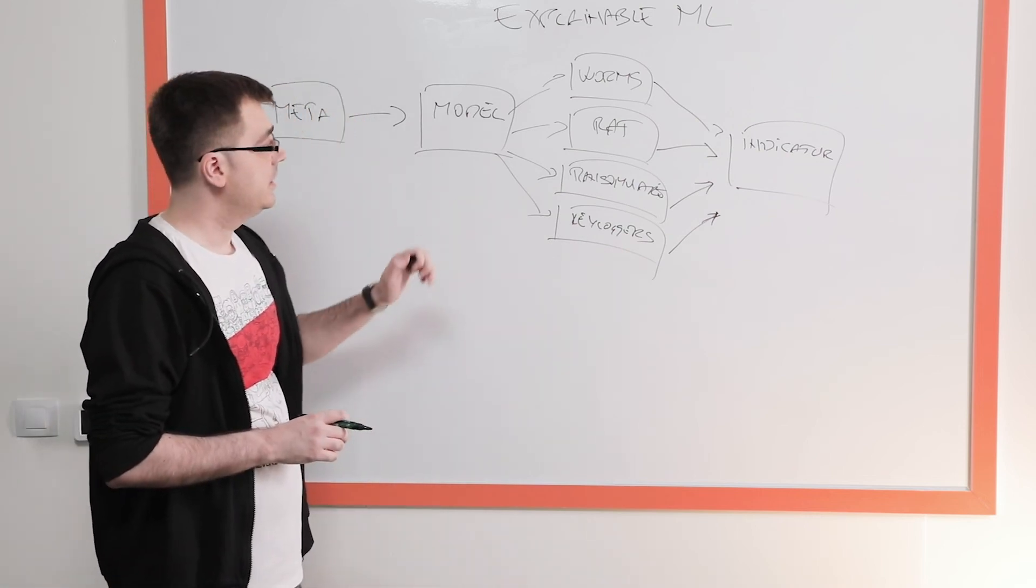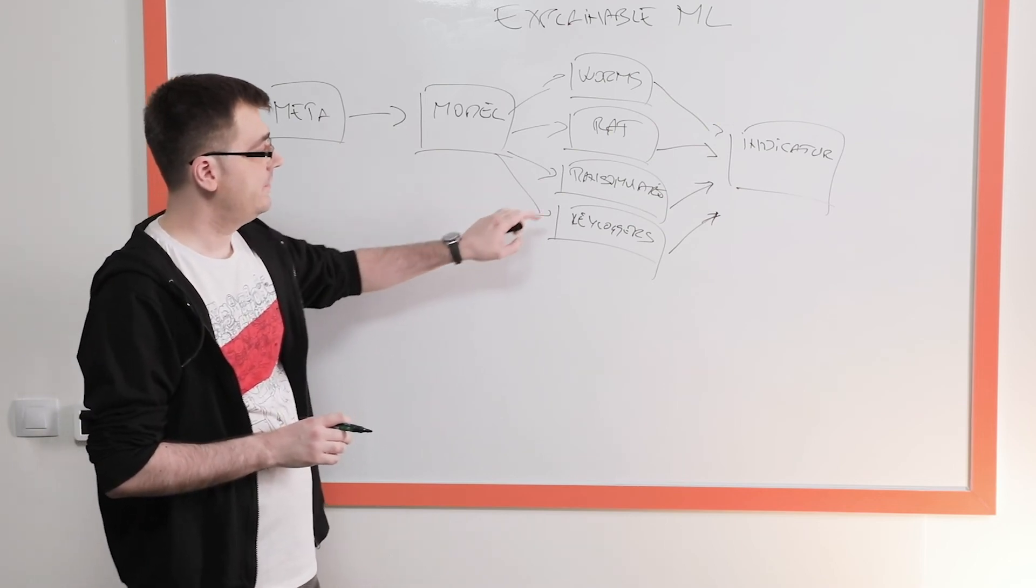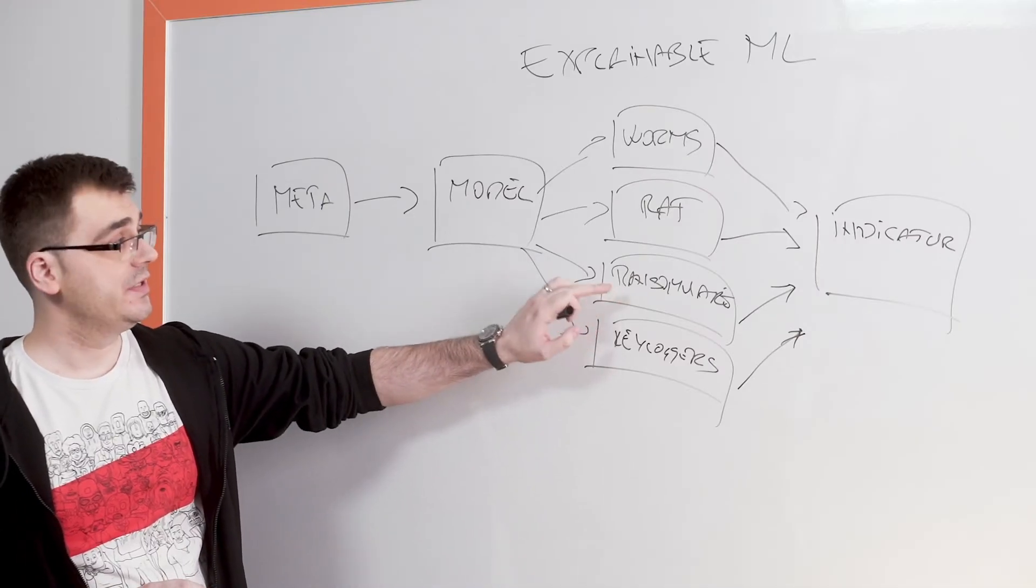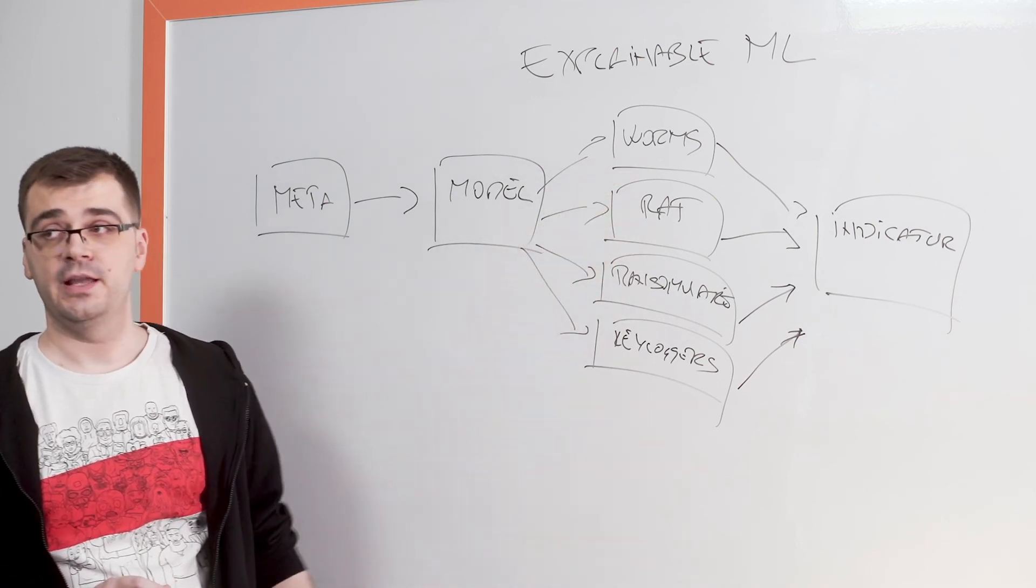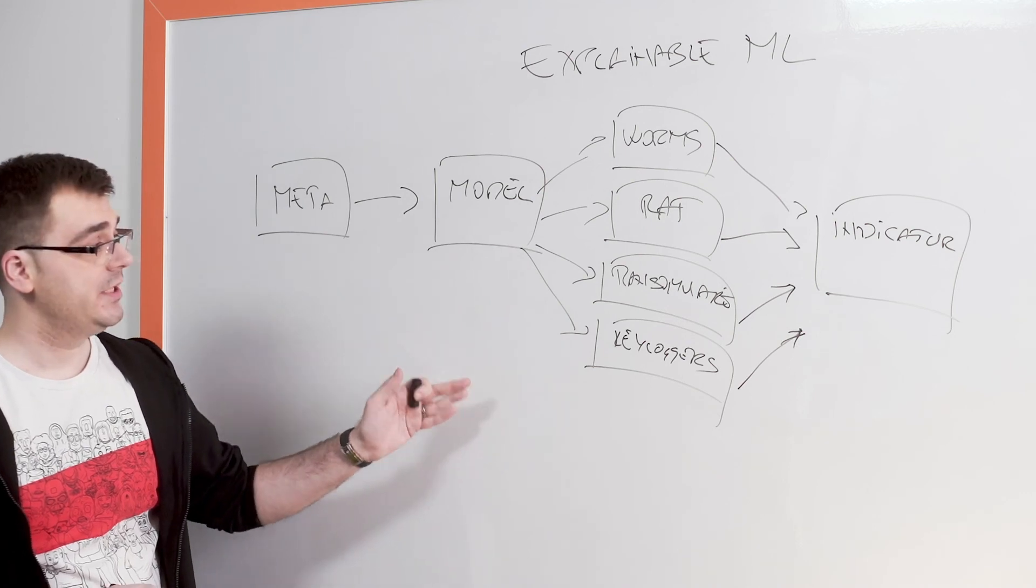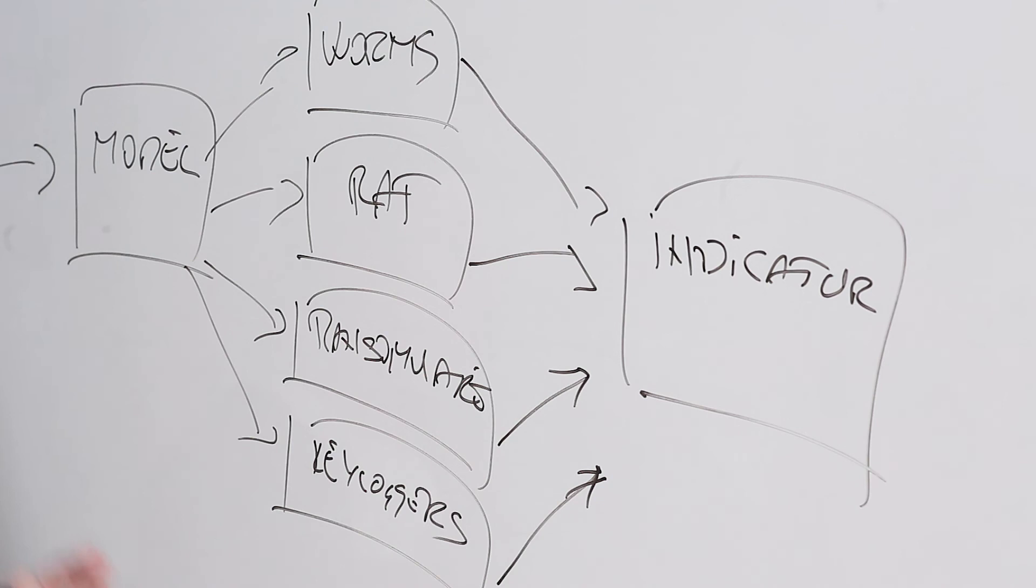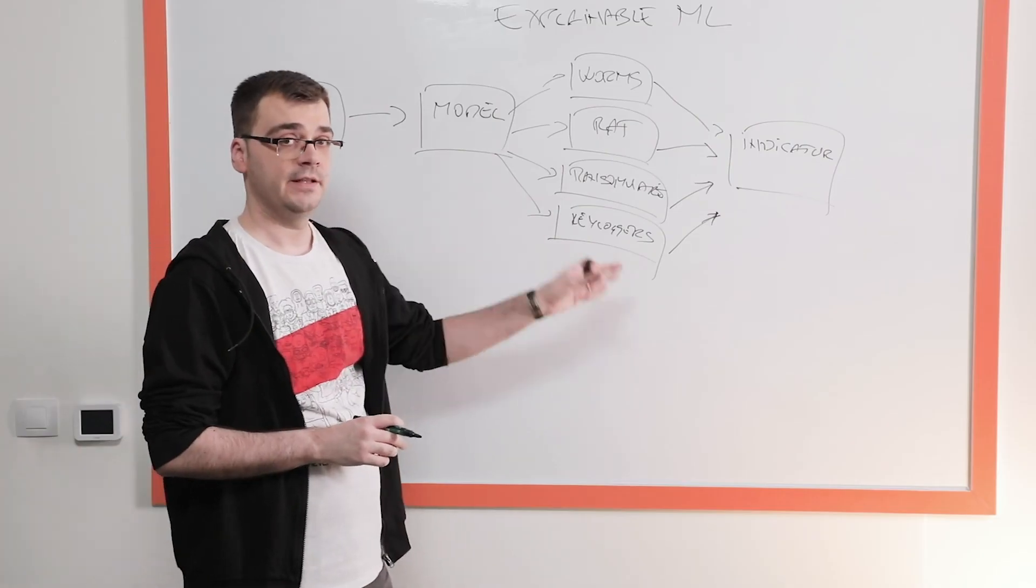Because a threat defender would have a different strategy to defend from a ransomware attack versus a RAT versus a worm or anything like that. And the reason why we specifically started with these threat types is because they have the potential of creating the largest amount of damage within the organization if they were successful in infecting it.